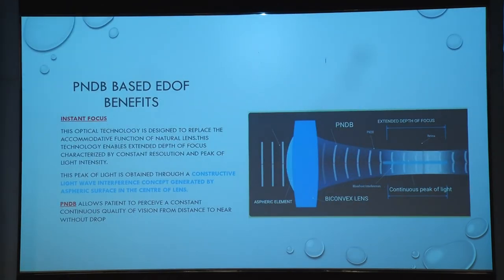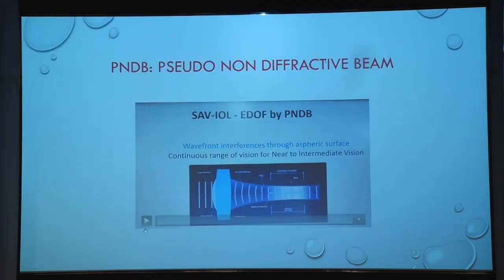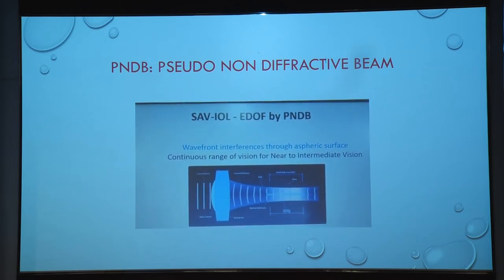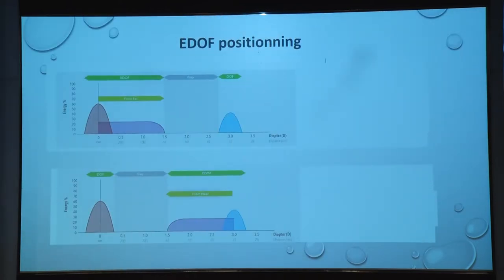These are the pseudo non-diffractive beams as explained. There is wavefront interference through the aspheric surface producing a continuous range of light, giving near and intermediate vision. EDOF positioning is also very important. We get near vision and intermediate distance nearer to near vision, and a little short of distance vision.